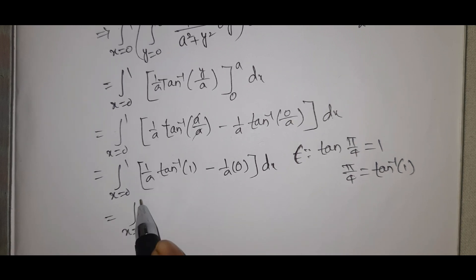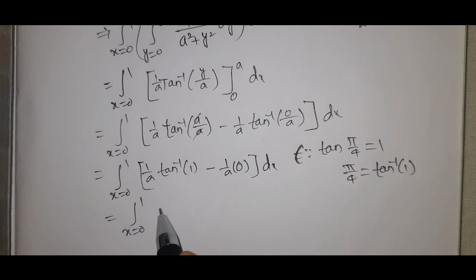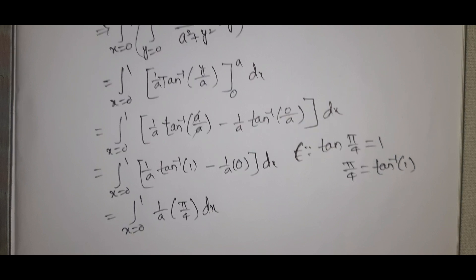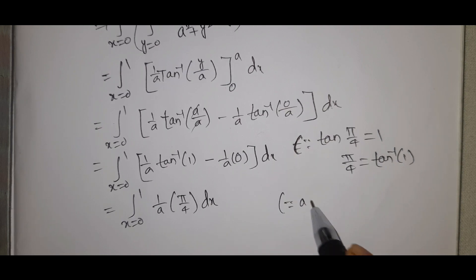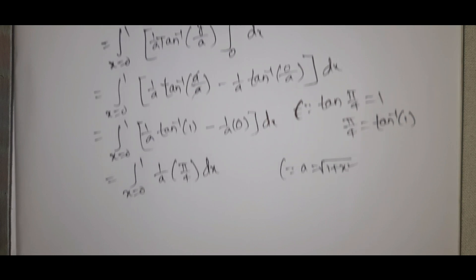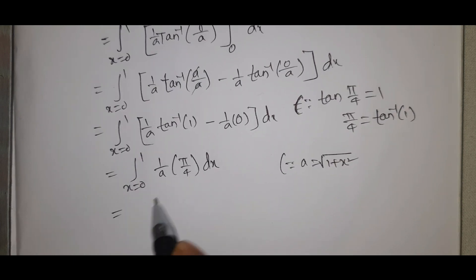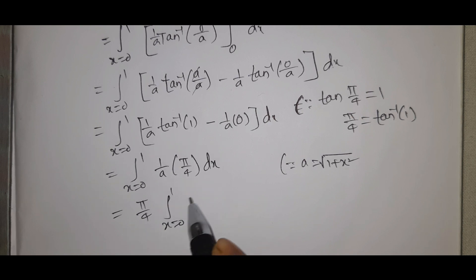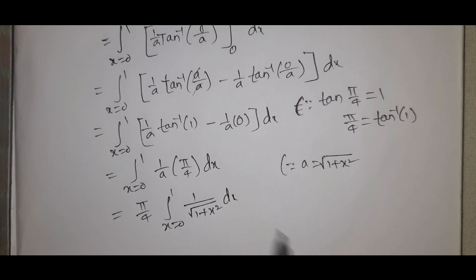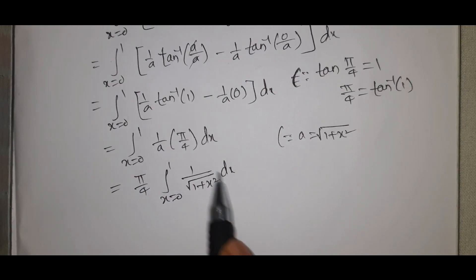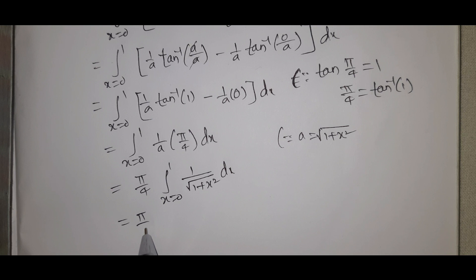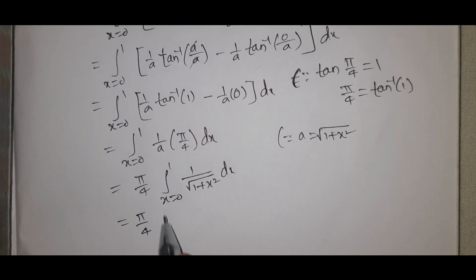So we have (π/4) integral from x=0 to 1 of (1/a) dx. Since a = √(1+x²), this becomes (π/4) ∫₀¹ 1/√(1+x²) dx. The direct formula for ∫1/√(1+x²) dx is sinh⁻¹(x).